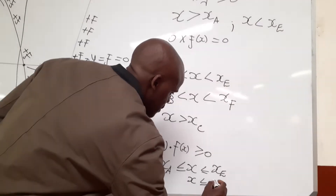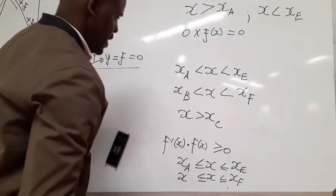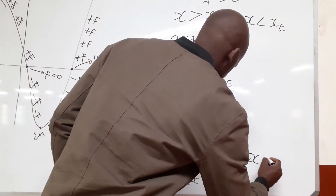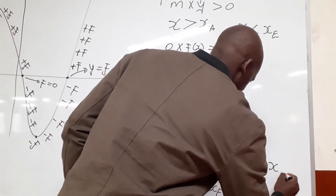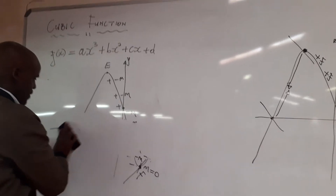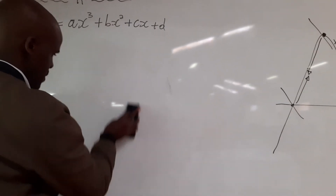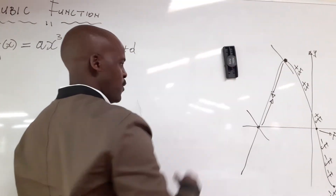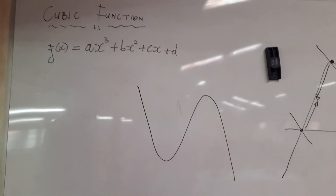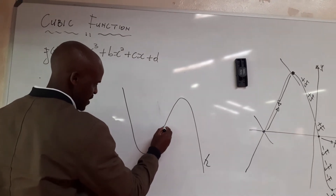Including zero: x less than or equal to x at f, and x greater than or equal to x at b; also x greater than or equal to x at c. Now the next question asks: for which values of x will the graph change its concavity?